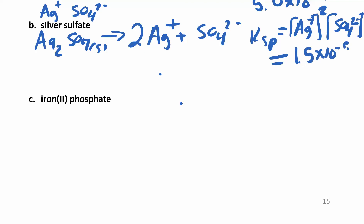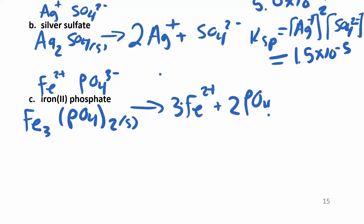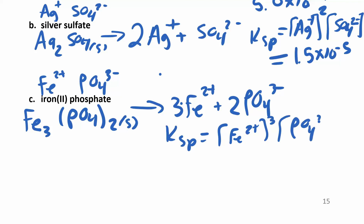Iron(II) phosphate: iron(II) has a plus 2 charge and phosphate is minus 3, so you end up with Fe₃(PO₄)₂ as the solid. That dissociates into three iron(II) ions and two phosphate ions. The Ksp expression is [Fe²⁺]³ × [PO₄³⁻]², and that number is about 1.0 × 10⁻³⁶.